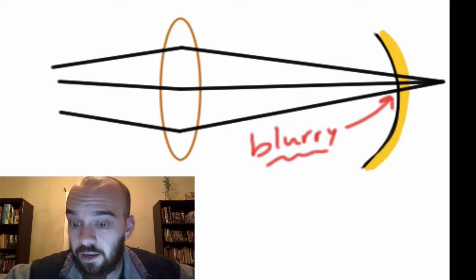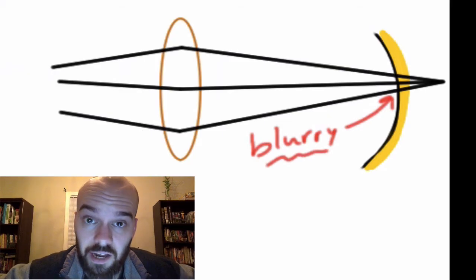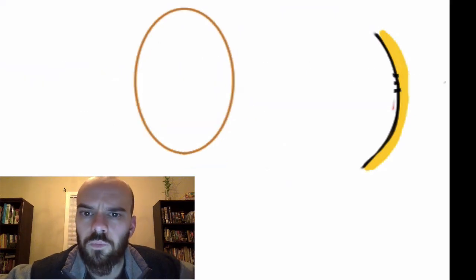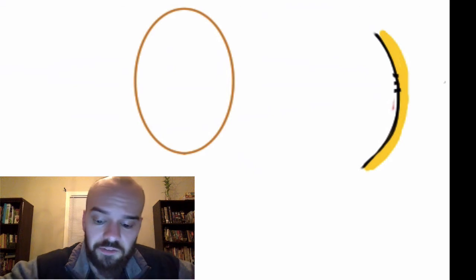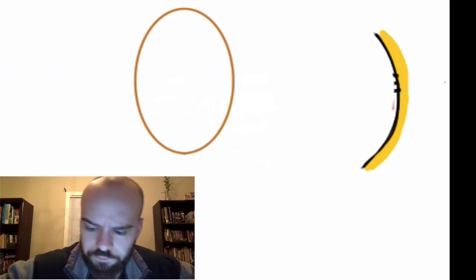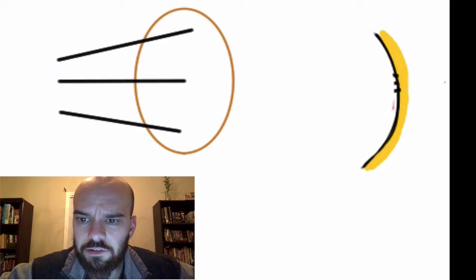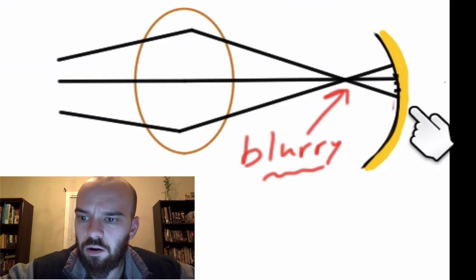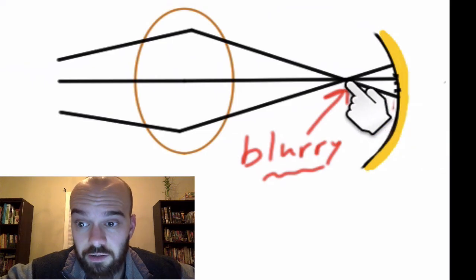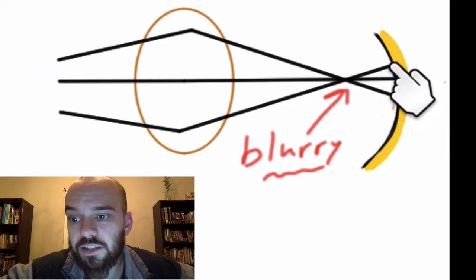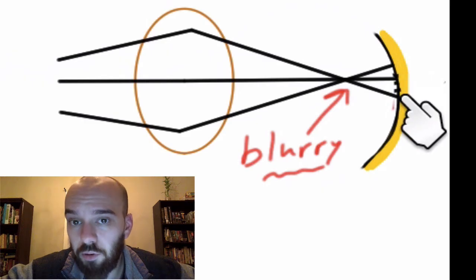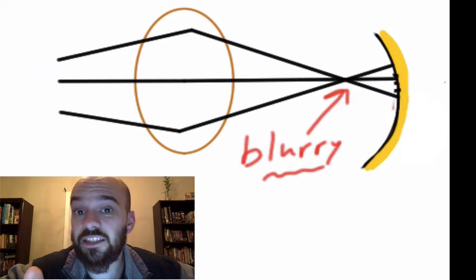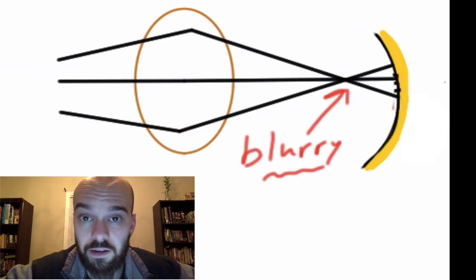Next, let's take a look at somebody who is nearsighted. I'm nearsighted — I have to wear glasses normally, I've got contacts in right now. This lens is wider, and light coming into it isn't going to get focused right onto the retina. It's going to converge before it hits the retina, so by the time that light gets to the retina, it's spread out again and blurry. That would be somebody who is nearsighted — they can't see things very well that are far away.